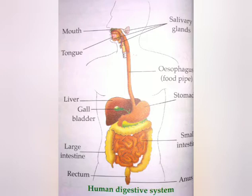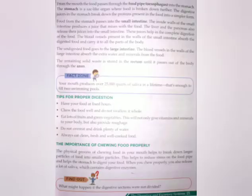The undigested food goes to the large intestine. The blood vessels in the walls of the large intestine absorb the extra water and minerals from the food. At last, the remaining solid waste is stored in the rectum until it passes out of the body through the anus.